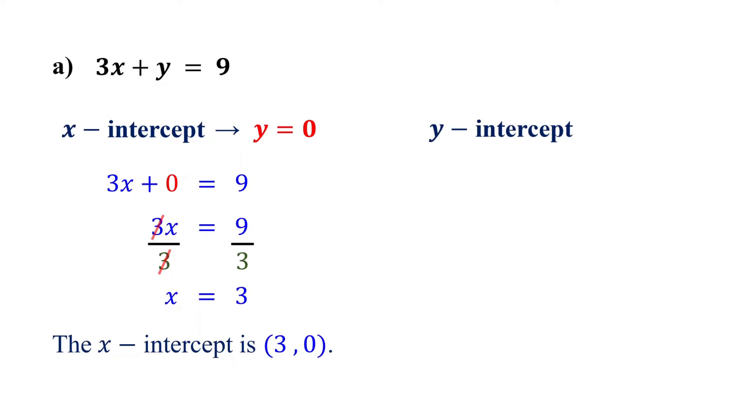The y-intercept is the point where the line crosses the y-axis. At this point, the value of x is 0. So, set x to 0 and solve for y.